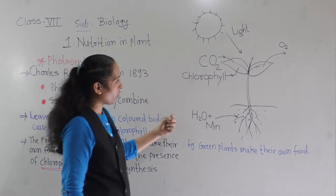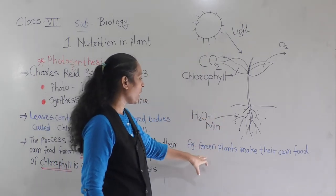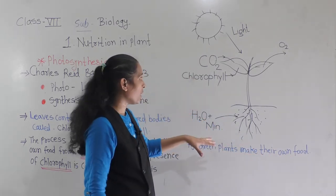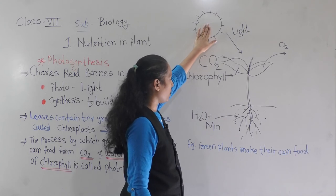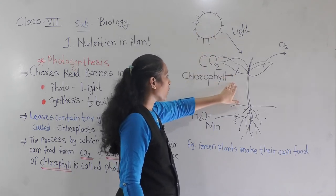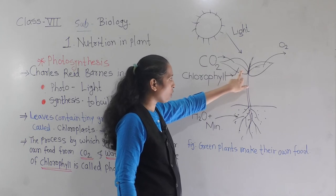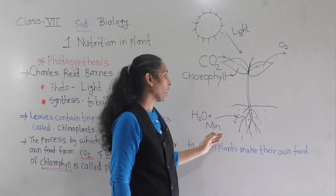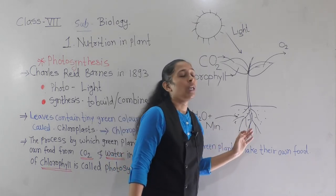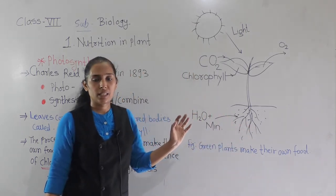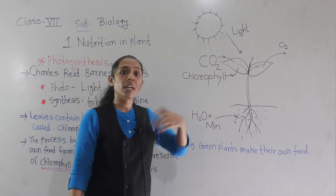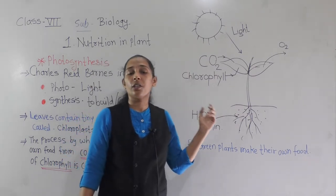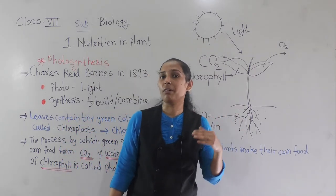I have drawn a diagram here showing the photosynthesis process. We can see the light, that is the sun. Chlorophyll is present in the leaves of the plant. Carbon dioxide is taken from the air, and water is obtained from the land. All these things are necessary for photosynthesis, and we will discuss how plants get these raw materials in the next point.